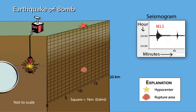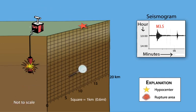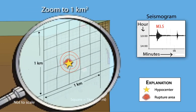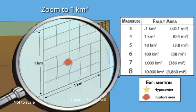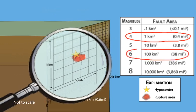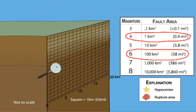The area where the rock ruptured or broke is small, and the distance the rocks moved is small. A magnitude 4 typically ruptures about 1 square kilometer. A magnitude 6 ruptures about 100 square kilometers.